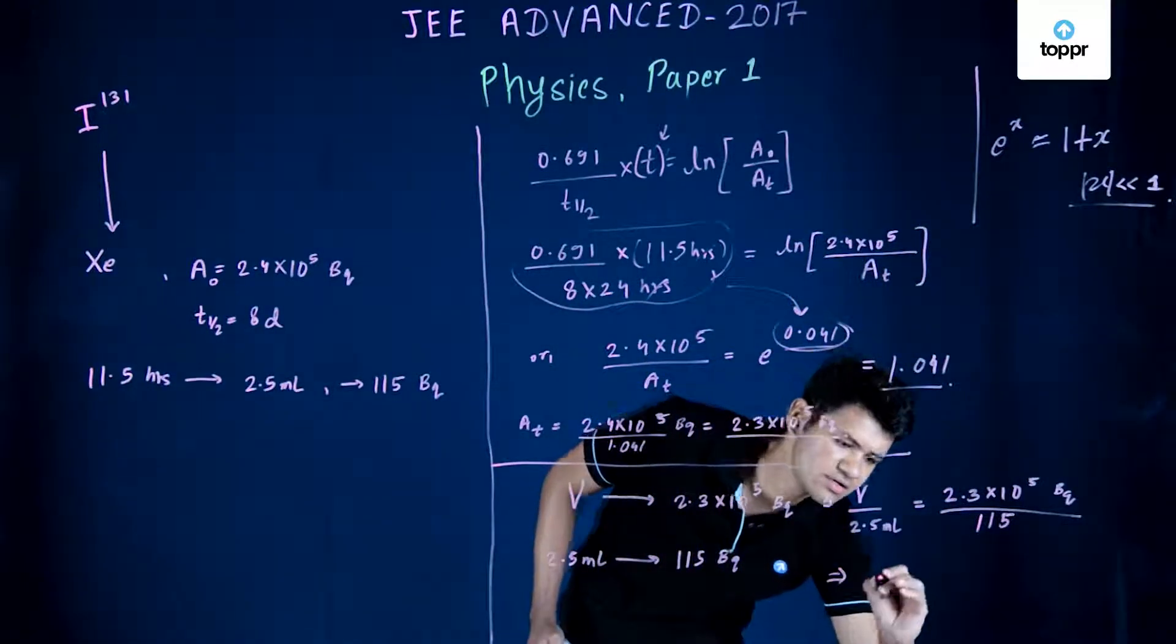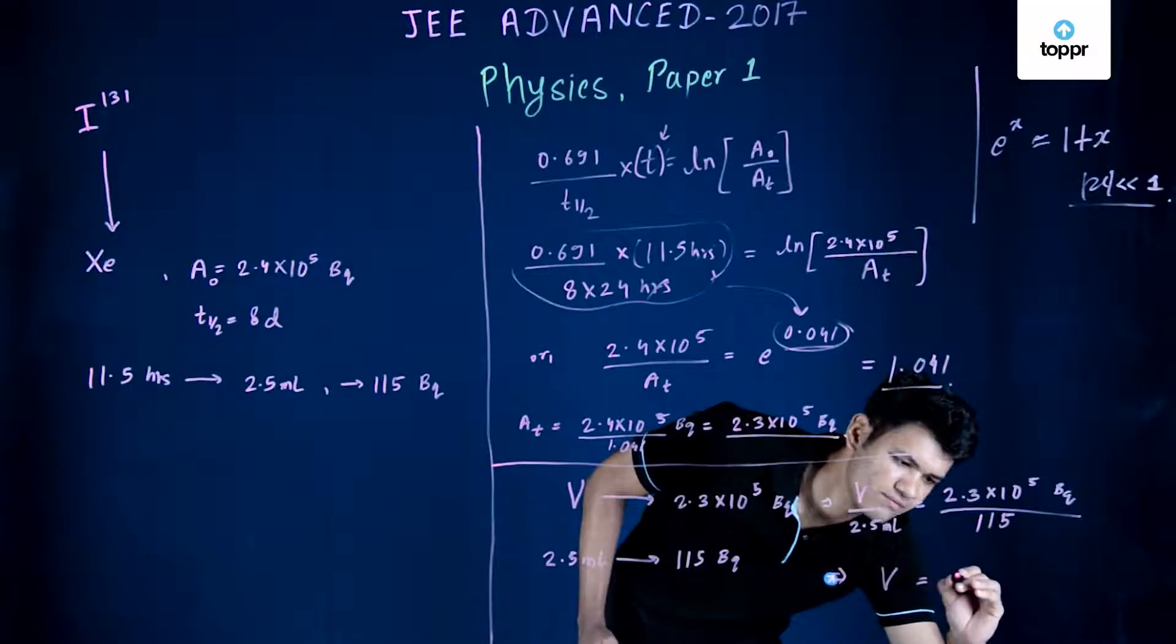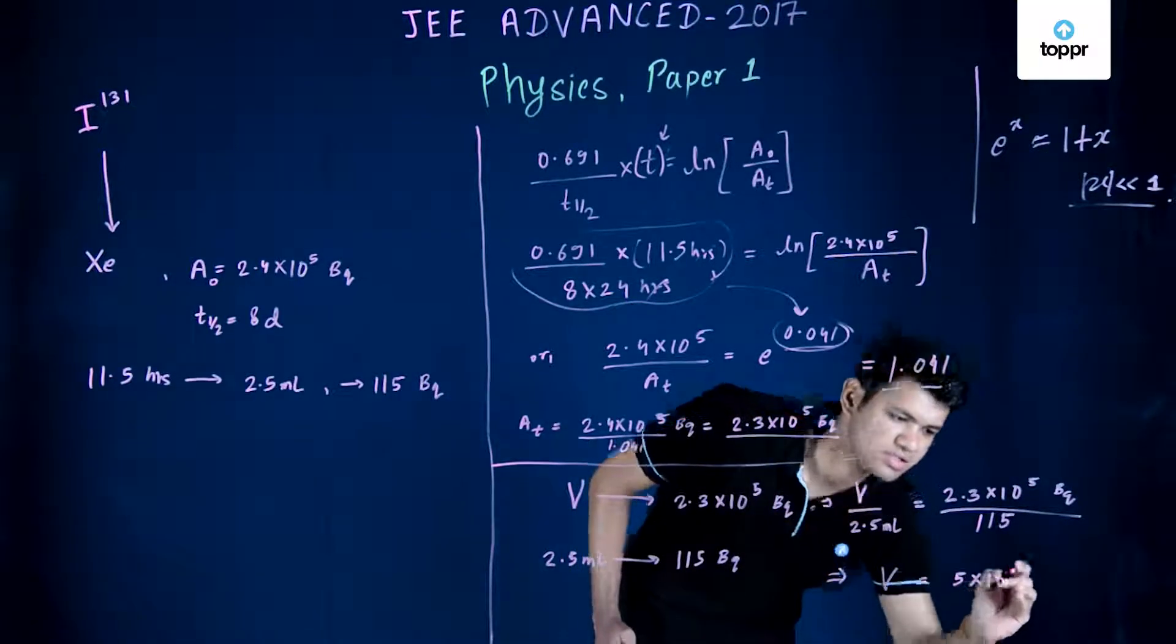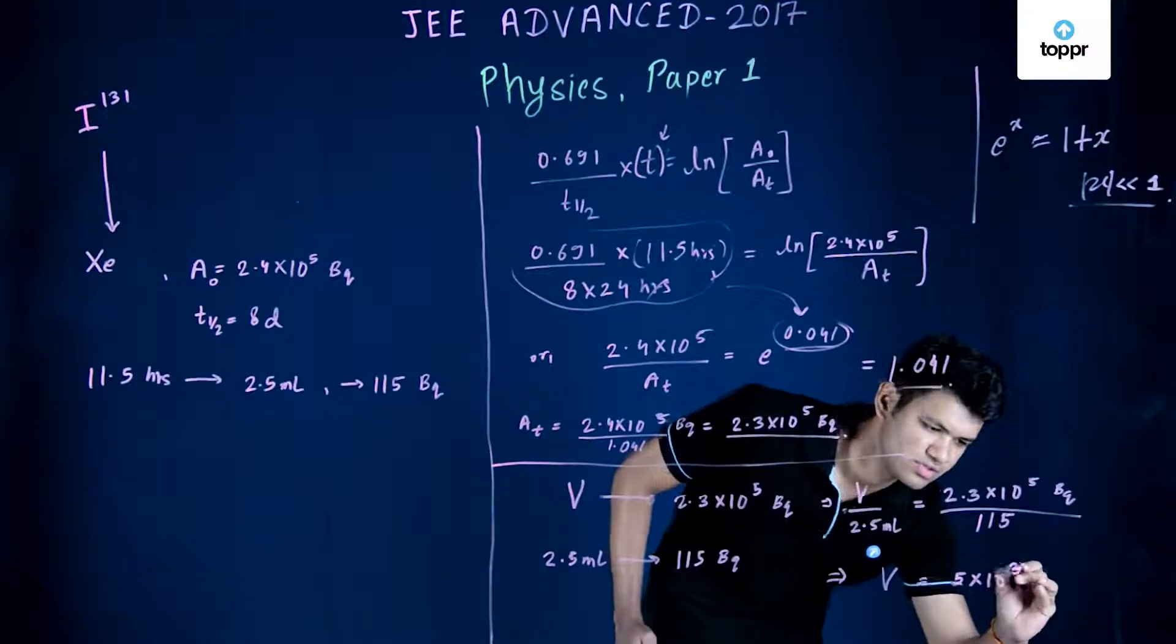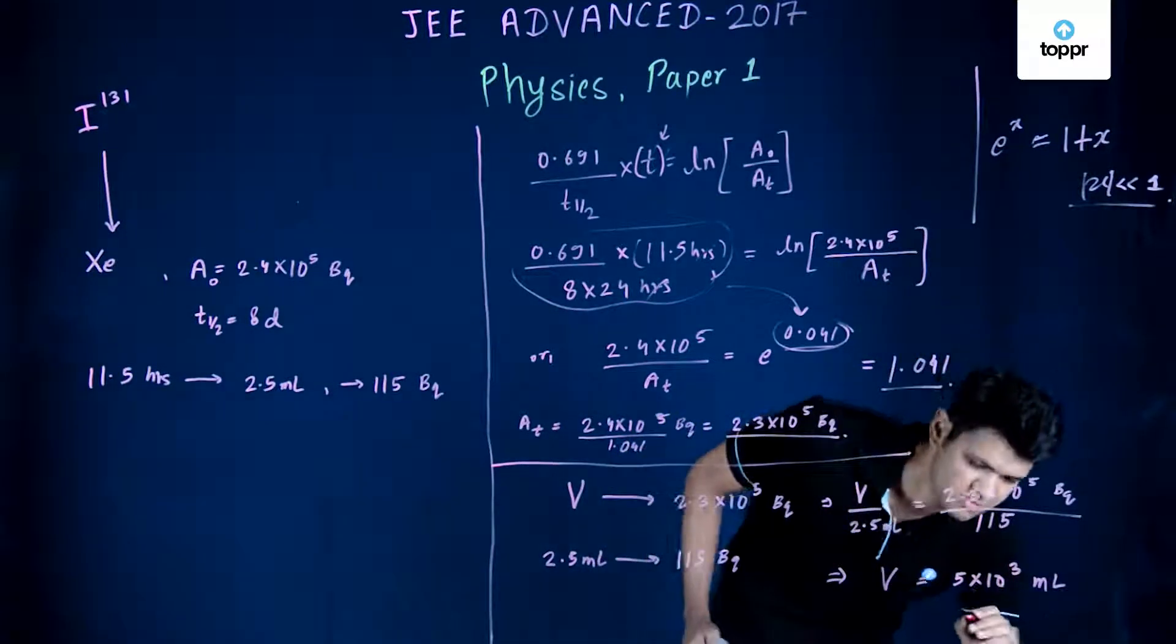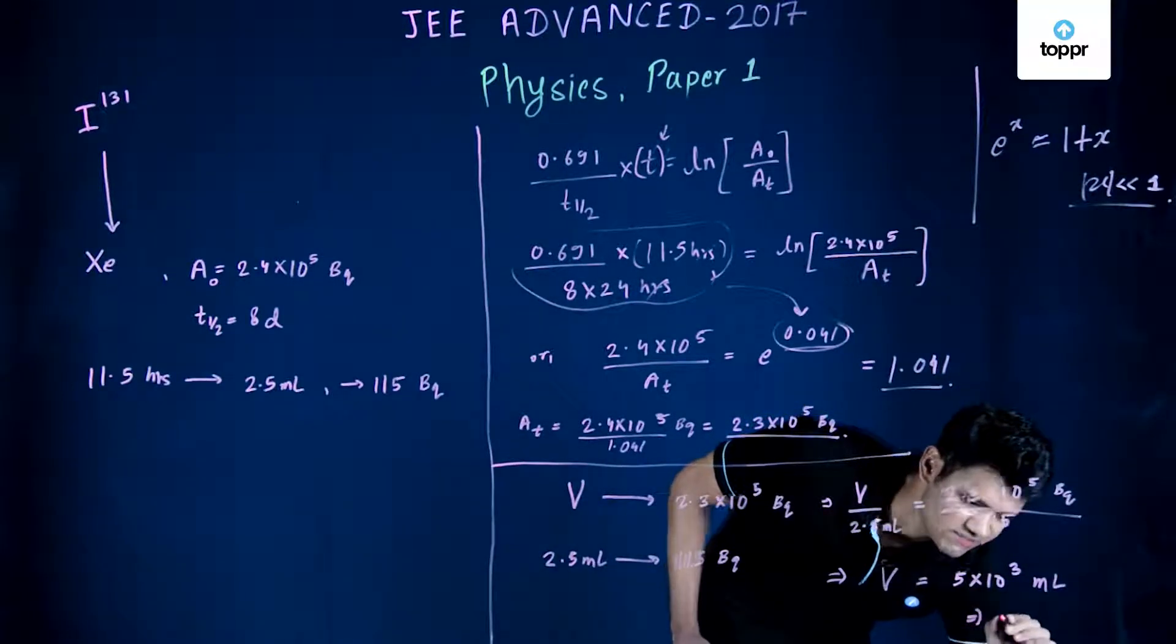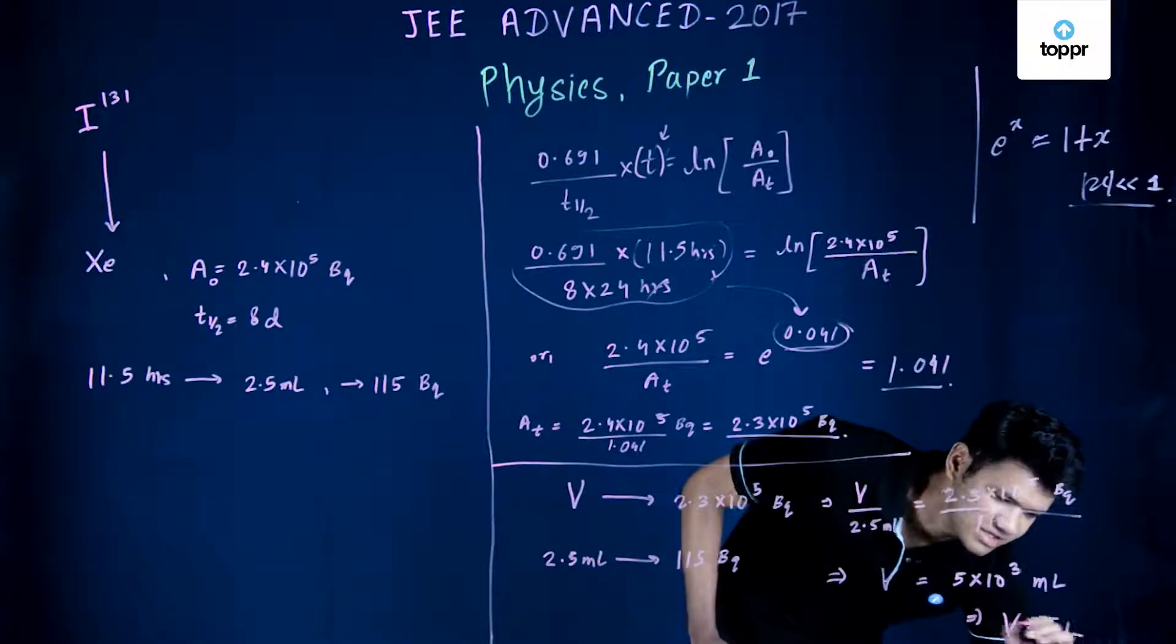If you simplify it you will get V as 5 × 10^3 ml, which is nothing but since milli is 10^-3, we get volume as 5 liters.